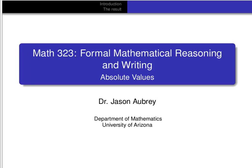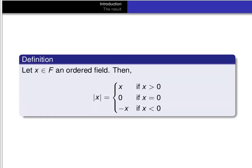In this video, we're going to define the notion of an absolute value in an ordered field, and then we'll prove some results about absolute values. So if x is an element of an ordered field f, then we define the absolute value of x as x if x is greater than 0, 0 if x is equal to 0, and the additive inverse of x if x is less than 0.